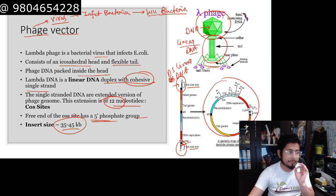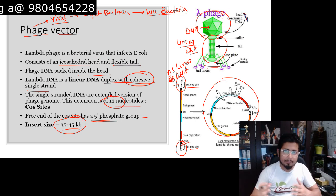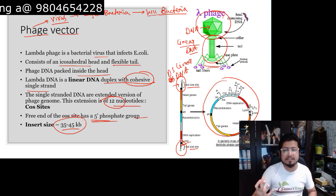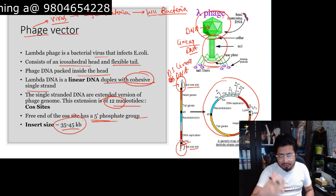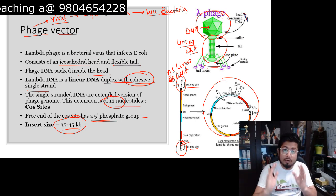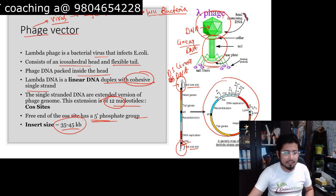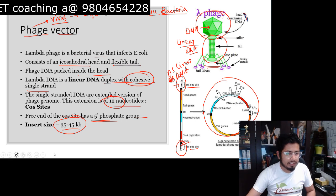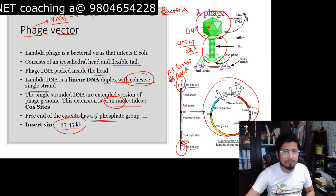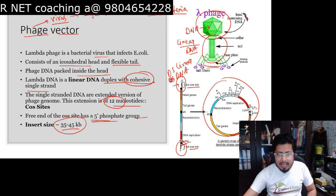This vector has a larger carrying capability — a larger insert size capability. The insert size is 35 to 45 kilobase pairs, which is quite large compared to the plasmid. A plasmid can only hold up to 10 to 15 kilobases, while the phage vector can hold up to 35 to 45 kilobases.